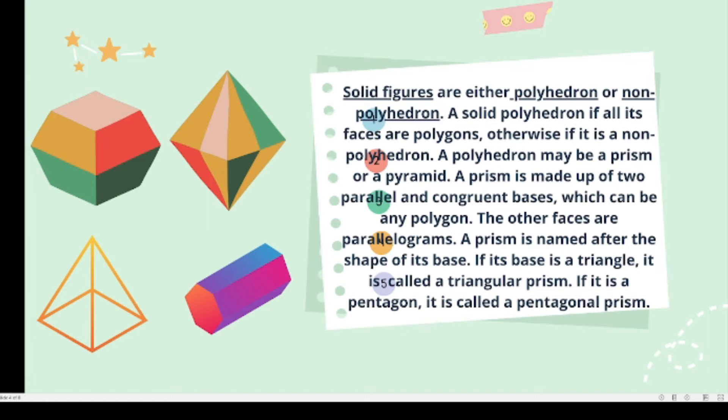A prism is named after the shape of its base. If its base is a triangle, it is called a triangular prism. If it is a pentagon, it is called a pentagonal prism.